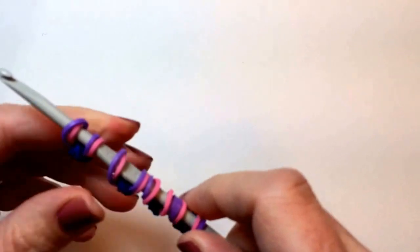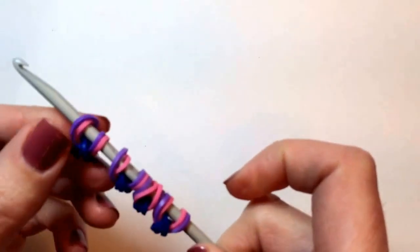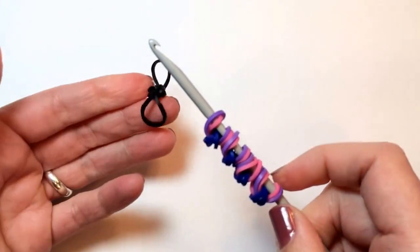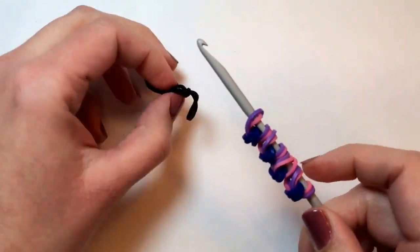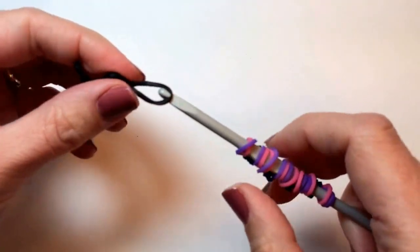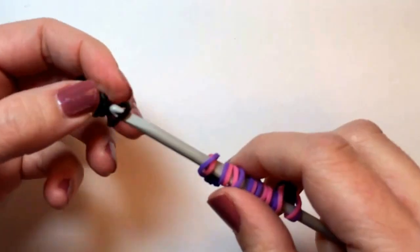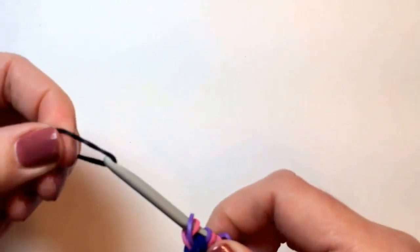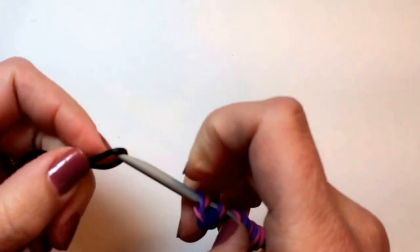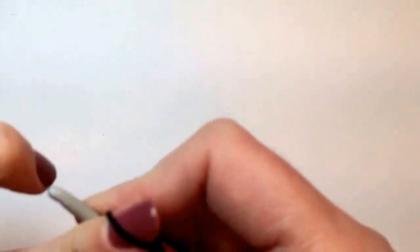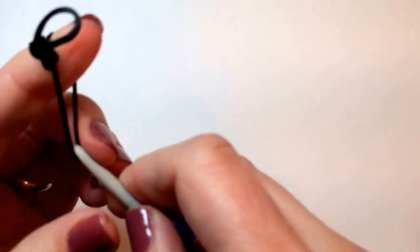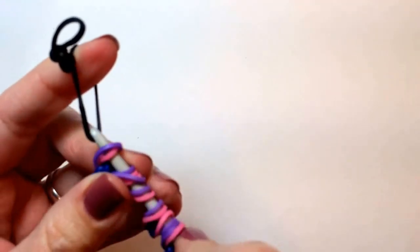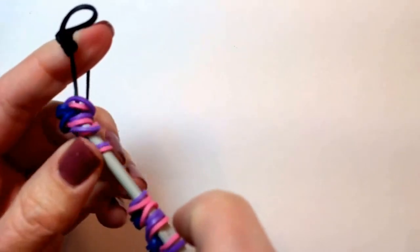So now you have your four butterfly wings lined up on your hook. You can take the black bands that you constructed earlier and hook one side. Stick your finger through so that you can pull it tight. There we go. And then slide your wings on to that black band.